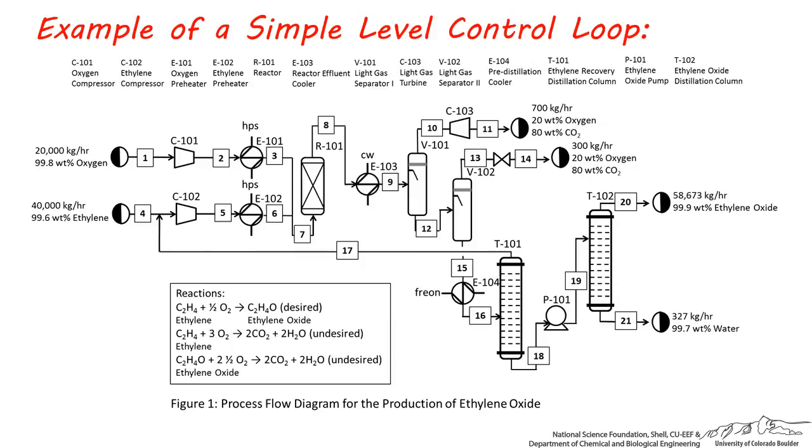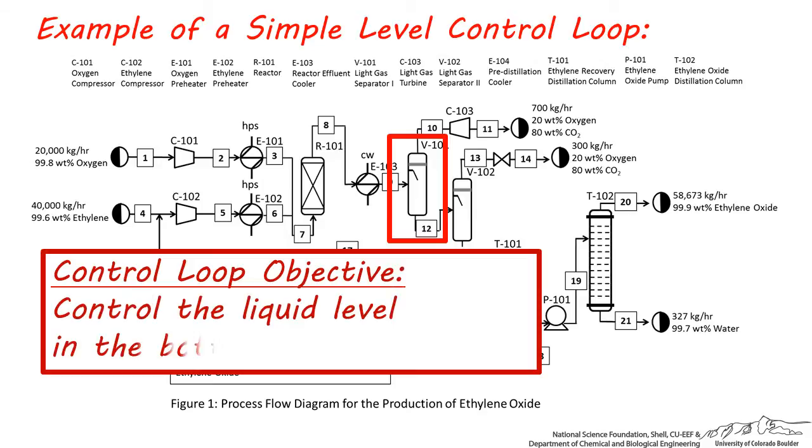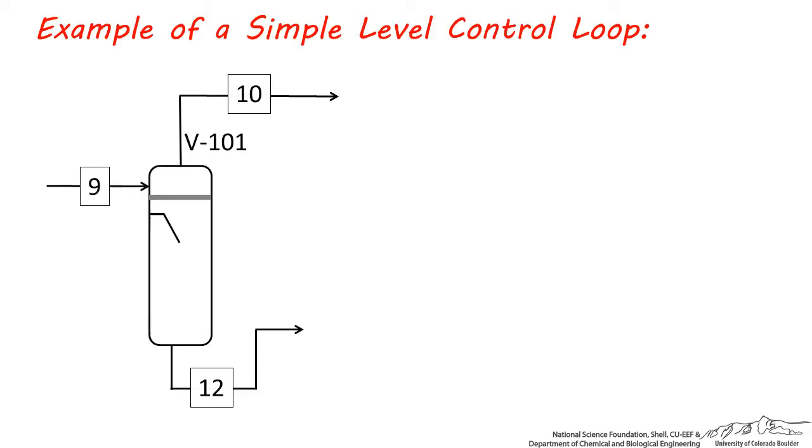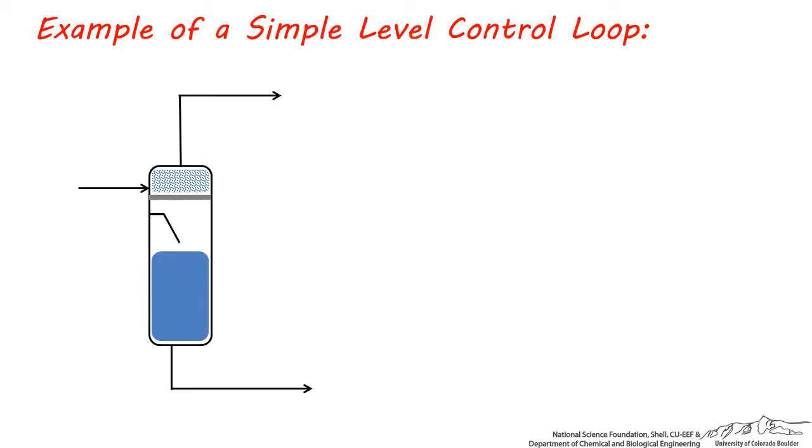As an example, let's consider placing a level control loop on flash V101. So the purpose of this feedback control loop is to control the level of liquid in this flash. Let's take a closer look at this separation vessel. Flashes are vapor-liquid separators, where vapor migrates to the top and liquid is held at the bottom. There should be a designated holdup volume, which is considered maximum and minimum for this vessel.